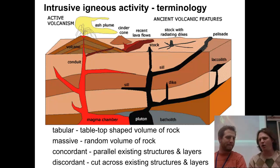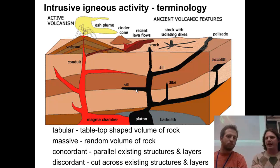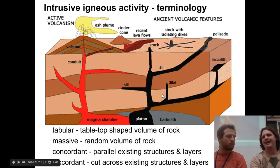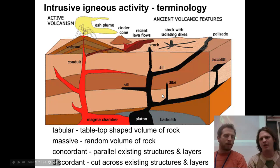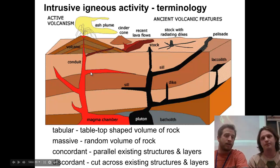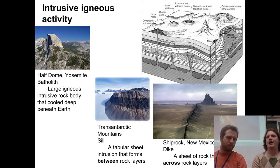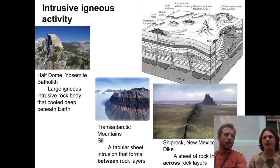We also have smaller intrusions. The sill cuts in between two different rock layers — it's a long, thin layer. Then there's the dike, which cuts across layers. If you compare it to a volcano: the volcanic pipe, once it solidifies, creates a dike if it's cutting across layers, or a sill if it's going parallel with the layers. These are all remnants of an old volcano underground. Over time, through uplifting and erosion, these features can be exposed at the surface.